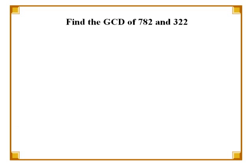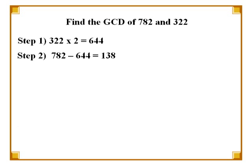Now let's try to find the greatest common divisor of 782 and 322. The first step, as before, is to multiply 322 by a number and get a product as close as possible to 782. Multiplying 322 by 2 gives us 644, which is as close as possible to 782. In the next step, we subtract 644 from 782 and get 138.